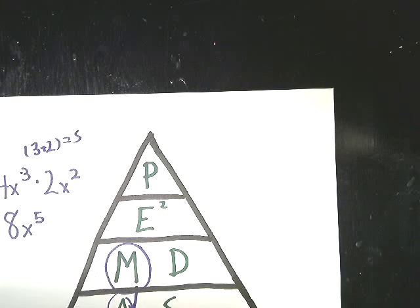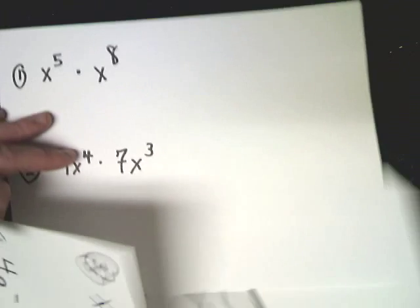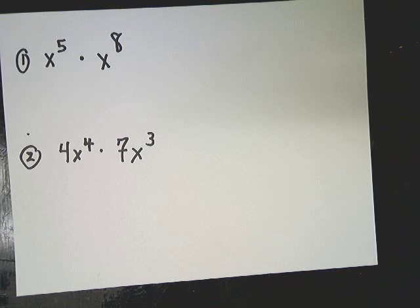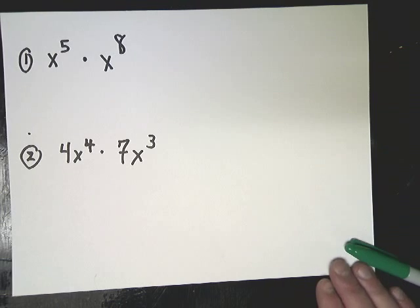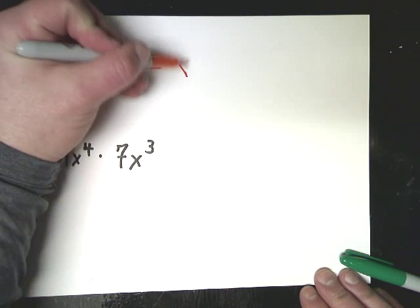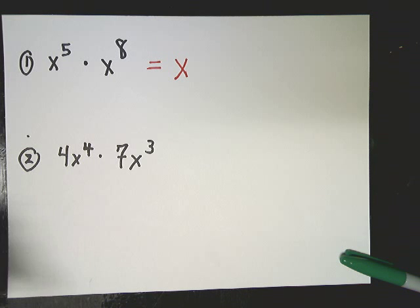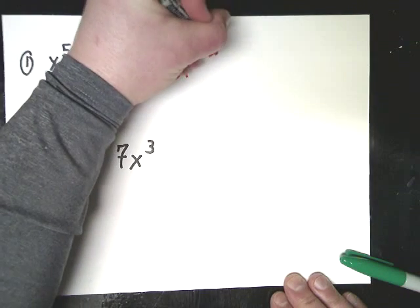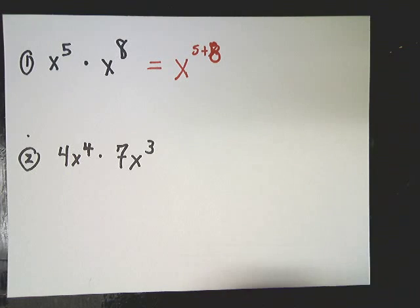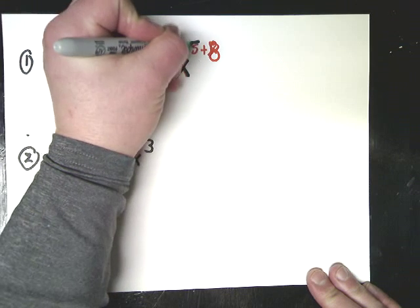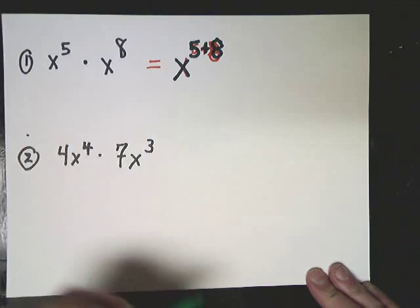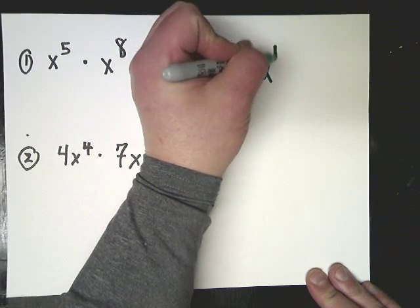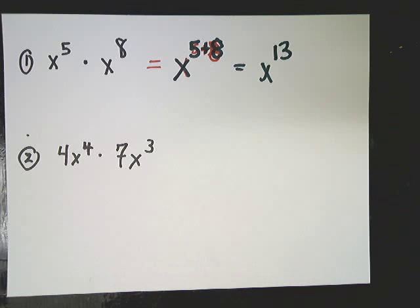In this one, it says x to the fifth times x to the eighth. Well, the little dot means times. If there were numbers here, they would be 1 and 1, so what's the point? So I'm going to do something with the x's. If I multiply the numbers, I add the exponents. So I just do x to the 5 plus 8, or x to the 13th power.